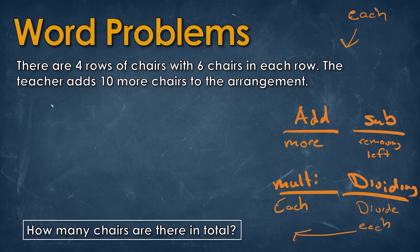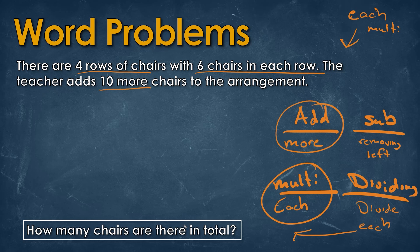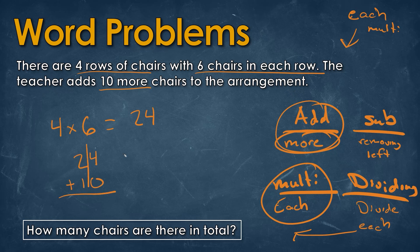Four rows of chairs with six chairs in each row — we see 'each' here, that's a multiplication 'each,' so we'll highlight that. The teacher adds 10 more chairs to the arrangement. How many chairs are there in total? The first sentence talks about four rows with six chairs in each row — it's 'each' in the sentence, not in the question. If we saw 'each' in the question, we would know we're dividing. So four times six is 24. Now the teacher adds 10 more chairs, so we add 24 plus 10 — four plus zero is four, two plus one is three — the total is 34 chairs.